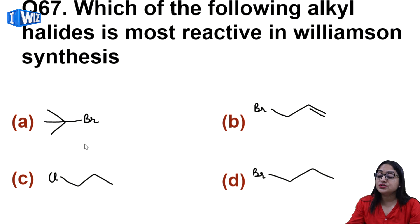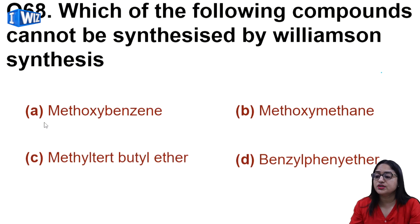Which of the following alkyl halide is most reactive in Williamson synthesis? When Williamson synthesis is performed, your alkyl halide should be primary. Definitely this cannot be it, and if it is resonance stabilized, then it will occur readily. So B is the correct answer.